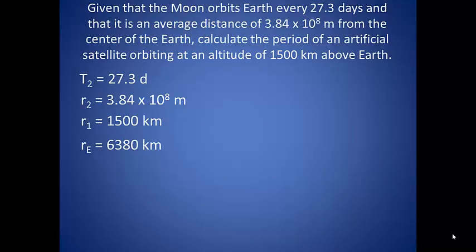So given that the moon orbits Earth every 27.3 days, and that it is an average distance of 3.84 × 10⁸ m from the center of the Earth, calculate the period of an artificial satellite orbiting at an altitude of 1500 km above Earth.